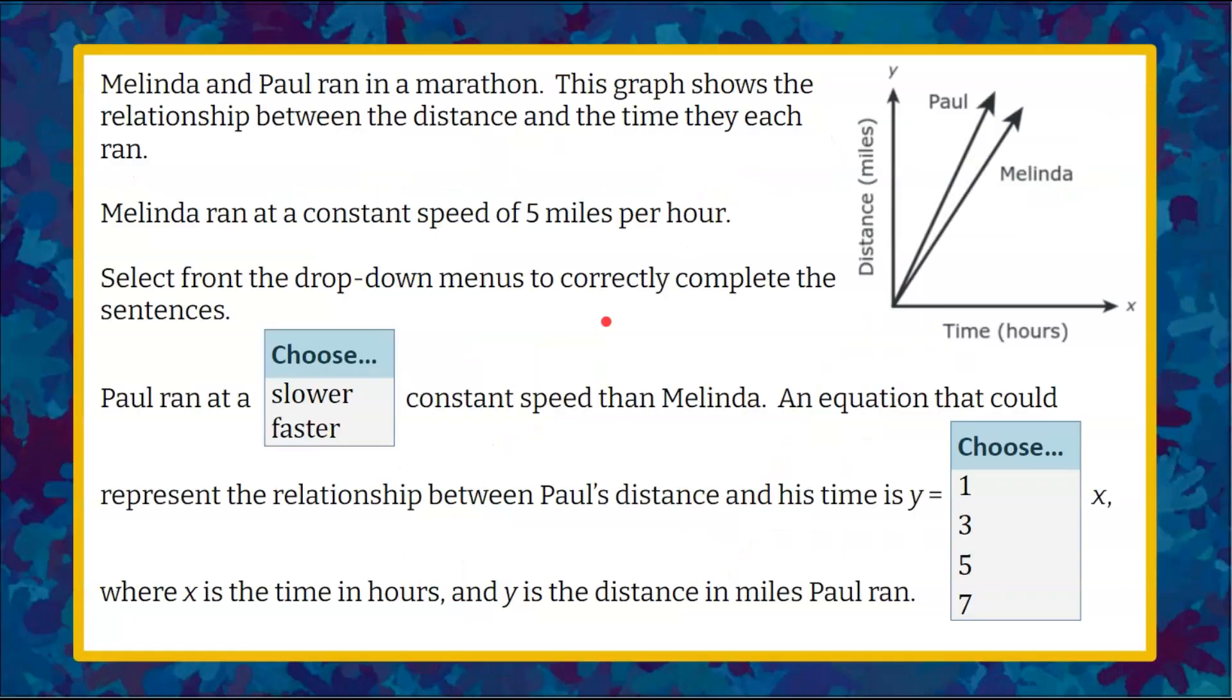Here's our question today. We have Melinda and Paul who ran in a marathon. This graph shows the relationship between the distance and the time they each ran. Right here's our graph with Paul and Melinda. We know that Melinda ran at a constant speed of 5 miles per hour. We're going to select from these drop-down menus to correctly complete the sentences.